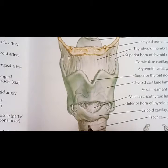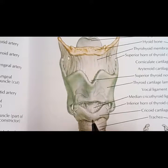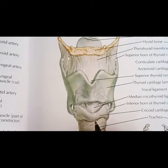The next extrinsic ligament is the cricotracheal ligament, which extends between the cricoid cartilage and the first tracheal ring. This is the cricotracheal ligament.